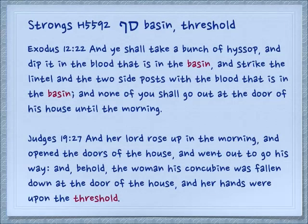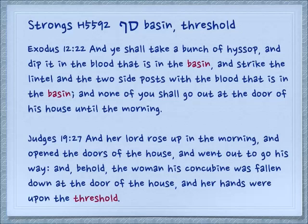These two letters spell a word which is Saf, which means basin or threshold. Exodus 12:22: 'And you shall take a bunch of hyssop and dip it in the blood that is in the basin and strike the lintel and the two side posts with the blood that is in the basin, and none of you shall go out at the door of his house until morning.' A little Passover instruction.